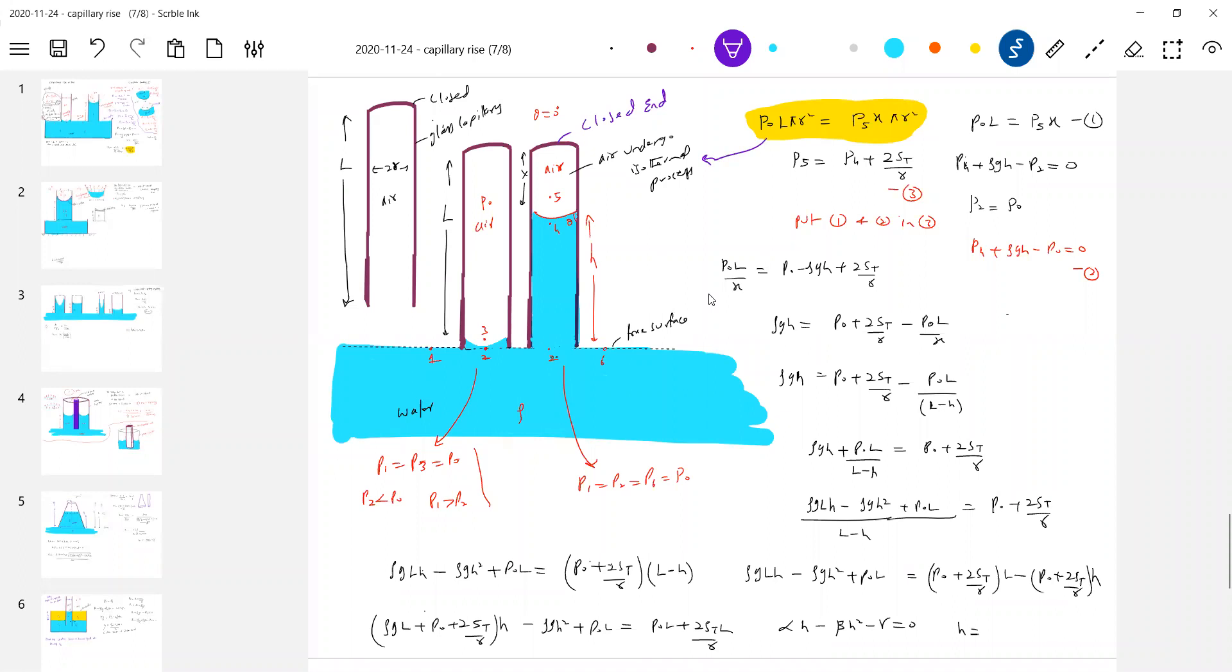So rest all equations we know how to write. Because here we have a meniscus. So this is a concave side, convex side. So P5 equal to P4 plus 2ST by r. Angle of contact, we assume it to be 0. Then again, writing manometric equations: P4 plus rho GH minus P2 equal to 0. P2 equal to P0. Then solving. So we are able to manage here. If this end is open, we know directly the formula: 2ST by rho GR. If this end is closed, if we do like this, the problem will change like this here. Getting the method?